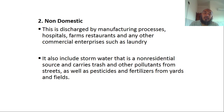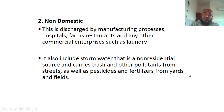Non-domestic wastewater is the discharge from manufacturing processes, hospitals, farms, restaurants, and other commercial enterprises like laundries. It also includes storm water from non-residential sources, carrying trash, pollutants, pesticides, and fertilizer from yards and fields. In Malaysia, storm water and sewage use different pipes — storm water goes through drainage, while sewage is accommodated by the sewer system.